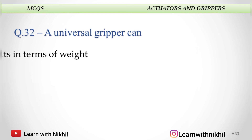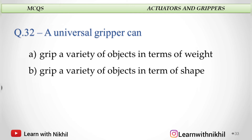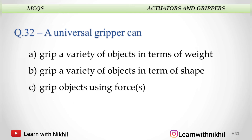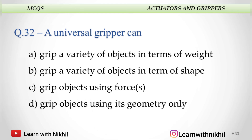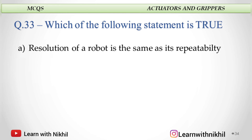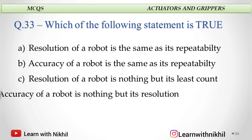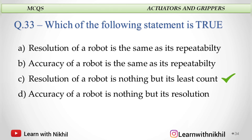A universal gripper can: A. Grip a variety of objects in terms of weight, B. Grip a variety of objects in terms of shape, C. Grip variety of objects using force, or D. Grip objects using its geometry only? The answer is grip a variety of objects in terms of shape — for example, our hand is a universal gripper. Which of the following statements is true? Resolution of the robot is nothing but its least count. And the answer is resolution of the robot is nothing but its least count.